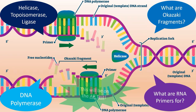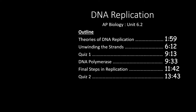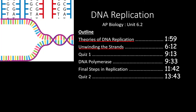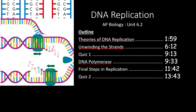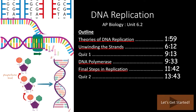This information will definitely be on the AP test, so stick with us as we cover everything you need to know about DNA replication. In this video, we'll take a look at Section 6.2 of the AP Biology Curriculum. We'll start by looking at the different theories of DNA replication, then how replication starts with the unwinding of a DNA strand. After a quiz, we'll cover DNA polymerase and finally how replication is finished with a few key enzymes. If you only need to review one section, feel free to skip forward to the times outlined here.